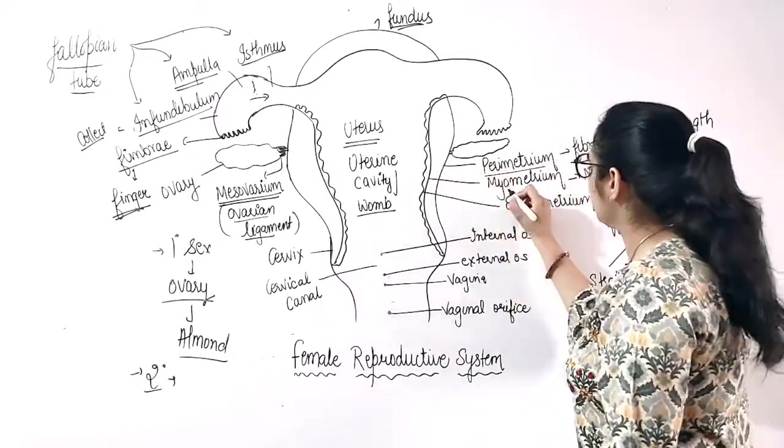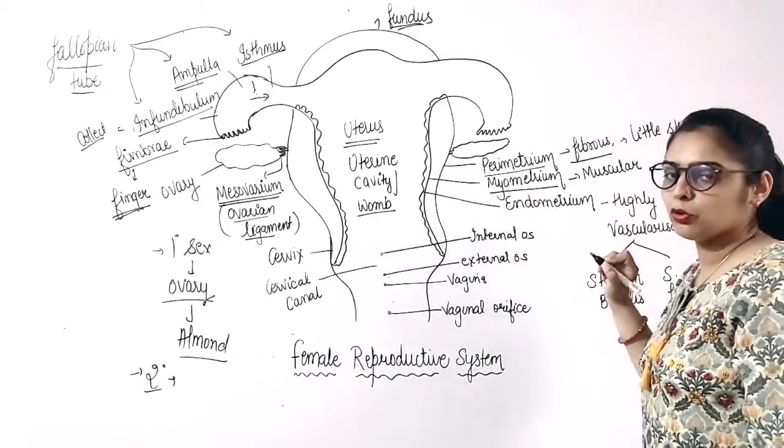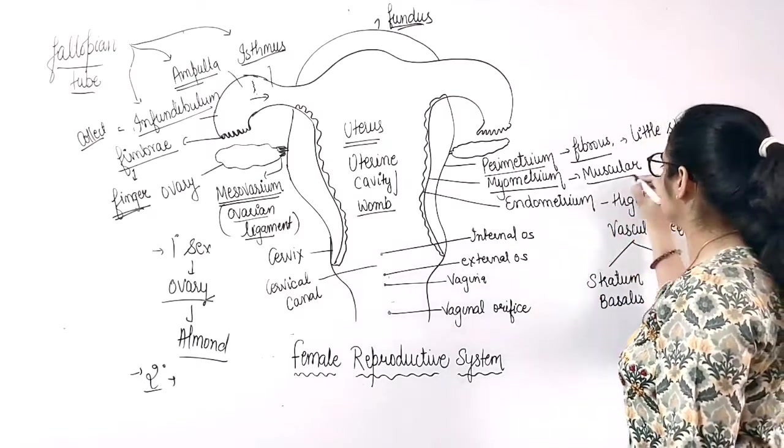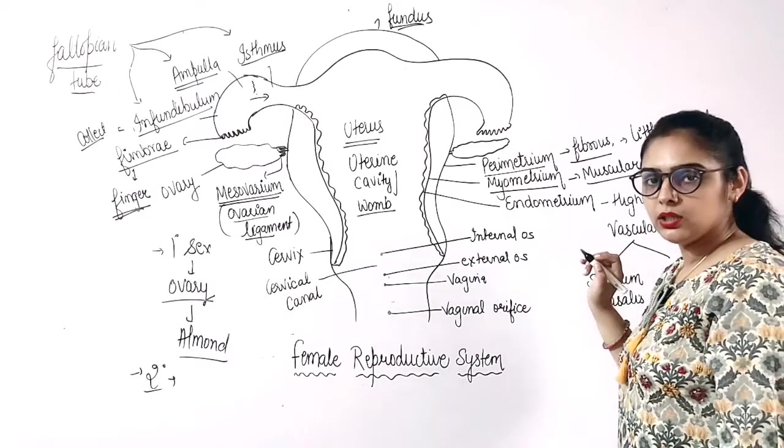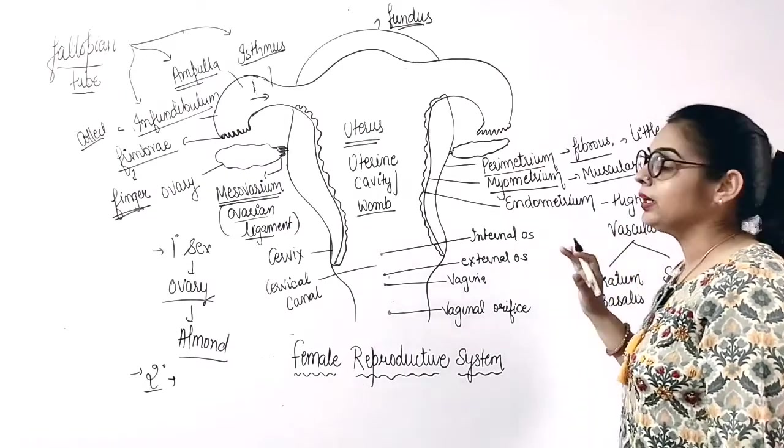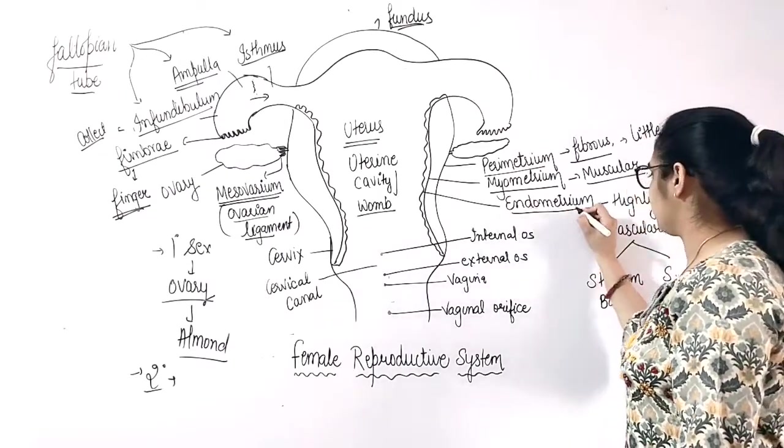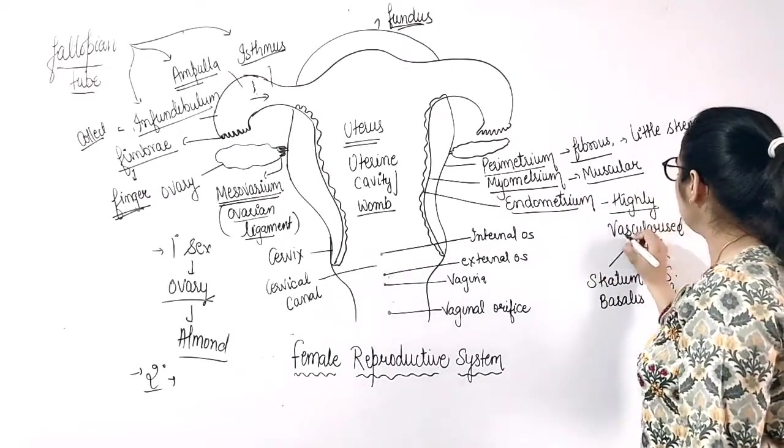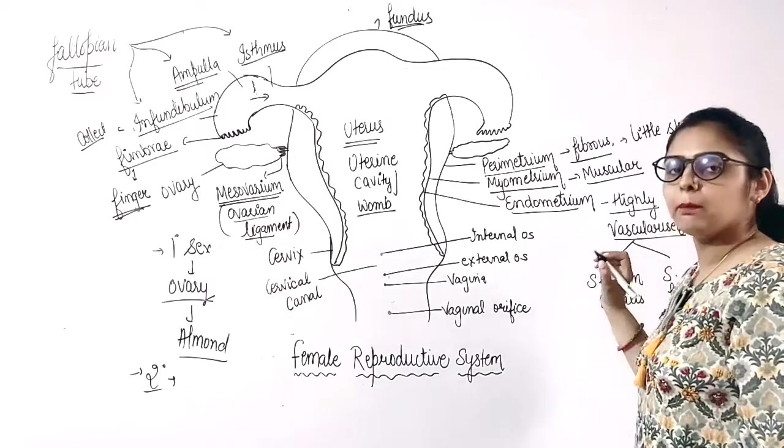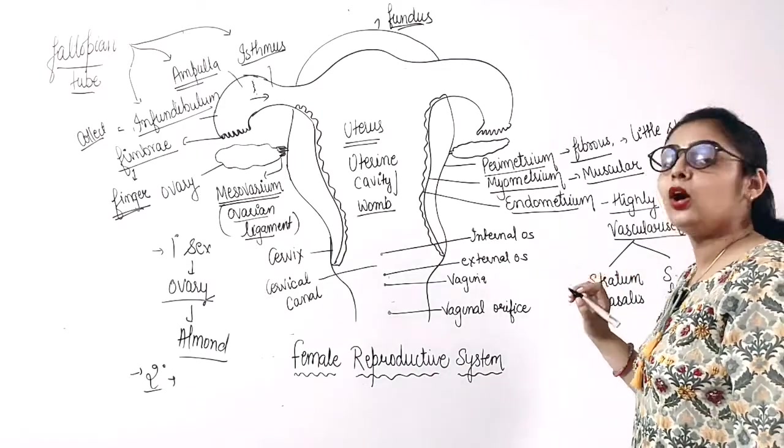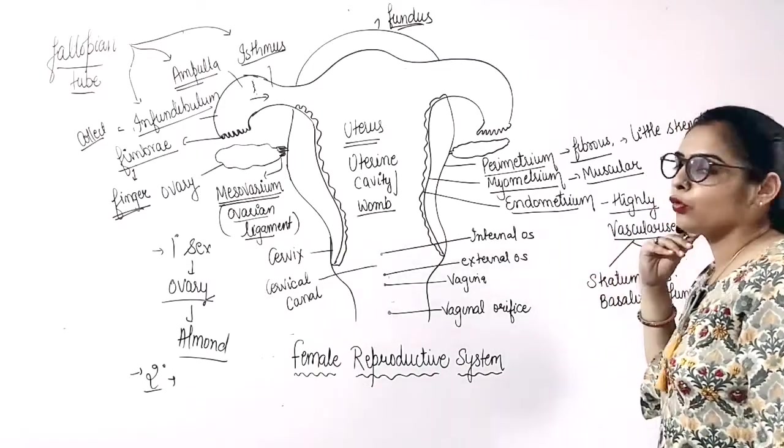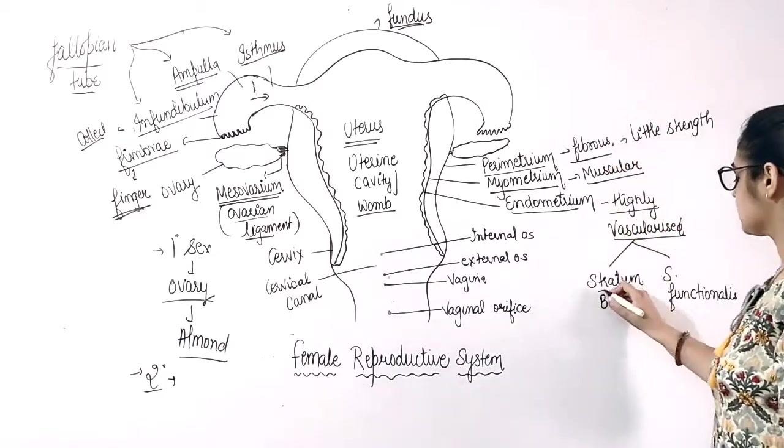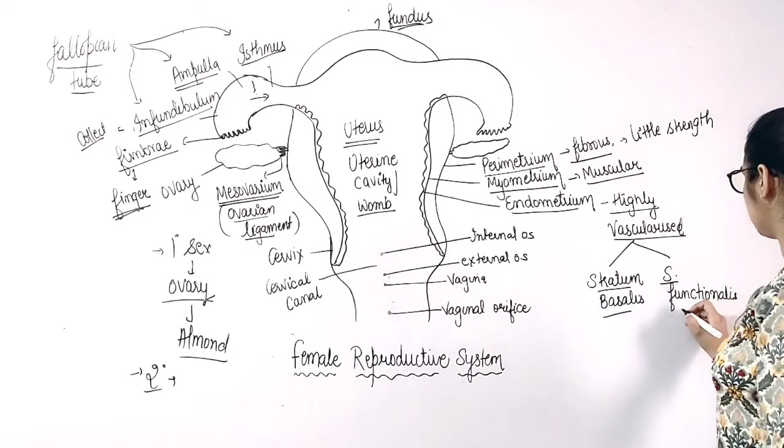The middle membrane is known as the myometrium or we can say the middle wall of the uterus is myometrium and it is muscular in nature. And the last one that is endometrium, that is endometrium and it is highly vascularized, meaning blood vessels are present. And endometrium is formed by two tissues, that is stratum basalis and stratum functionalis.